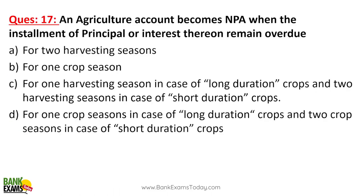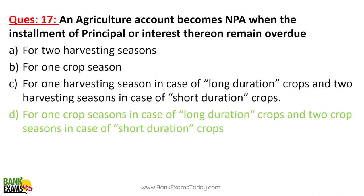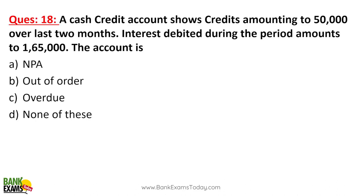An agricultural account becomes NPA when installments of principal or interest remain overdue for one crop season for long-duration crops and two crop seasons for short-duration crops. A cash credit account showing credits of 50,000 over two months while interest debits amount to 1,65,000 — the account is out of order, because the credits are not able to cover the interest.